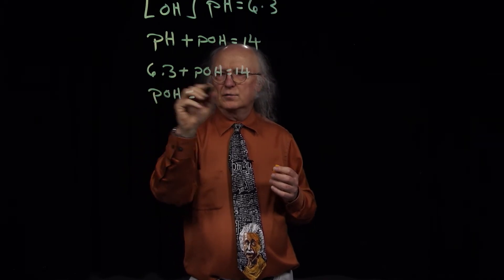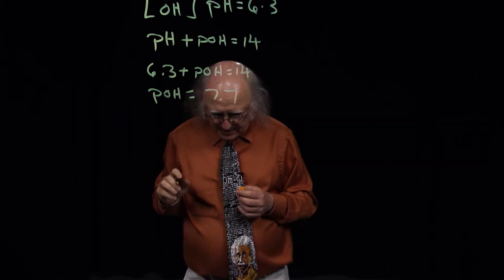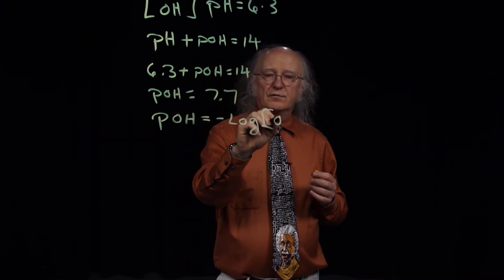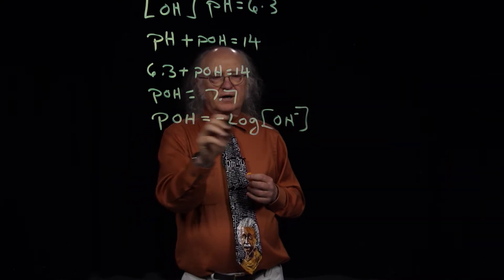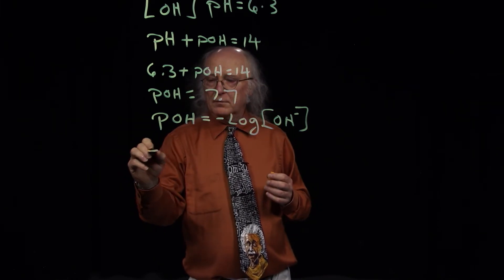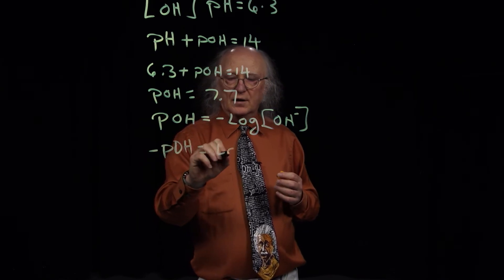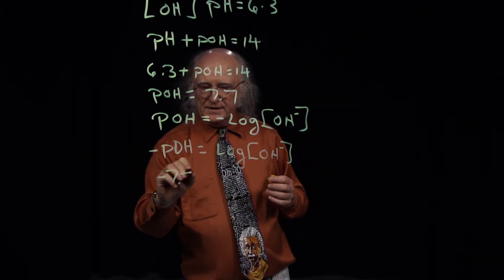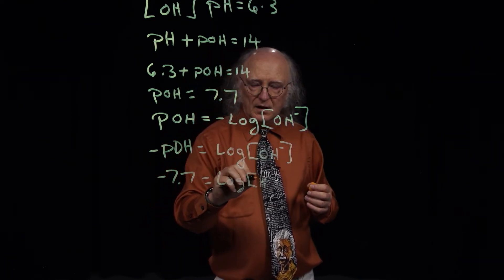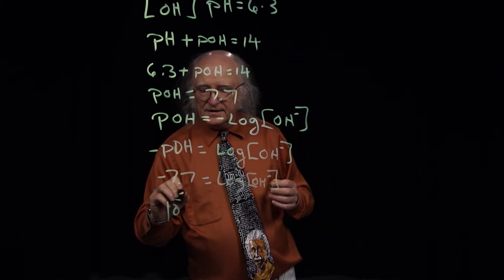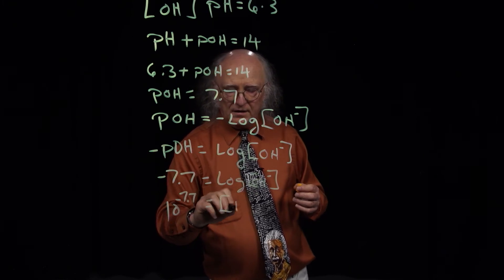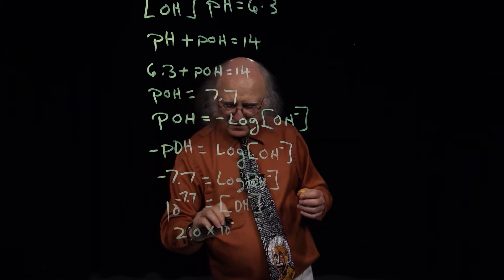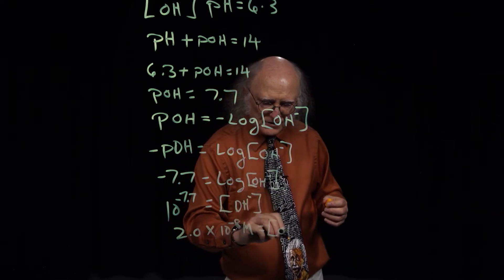Therefore, the pOH is equal to 7.7. And from the earlier equation, the pOH is equal to the negative log of the hydroxide ion concentration. Going through as before: negative pOH equals the log of the hydroxide ion concentration, so negative 7.7 is equal to the log of the hydroxide ion concentration. Therefore, 10 to the minus 7.7 equals the hydroxide ion concentration, which works out to be 2.0 times 10 to the minus 8th molar.